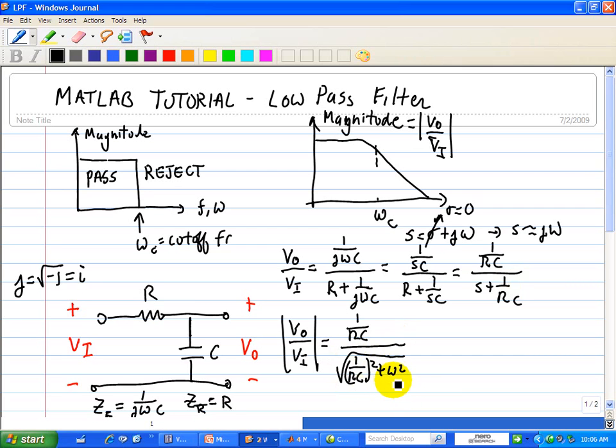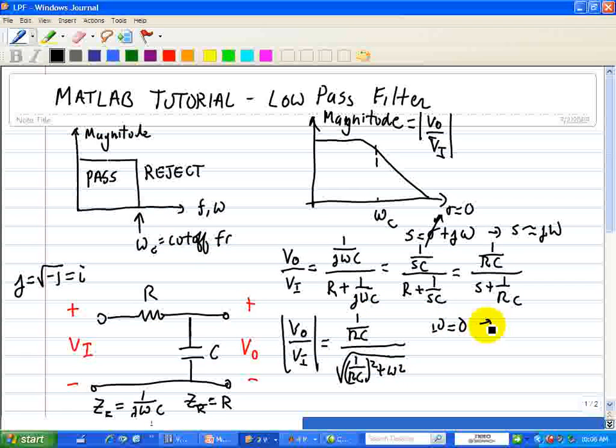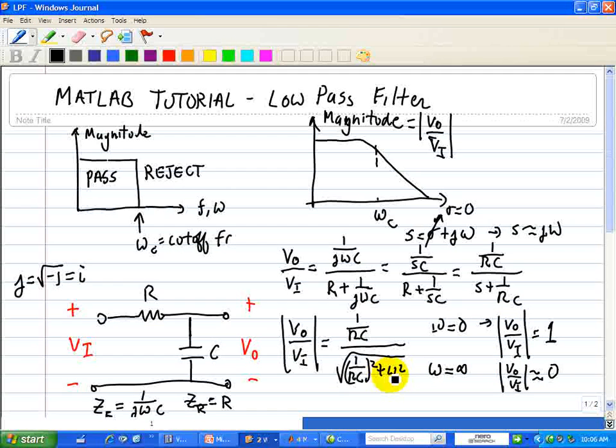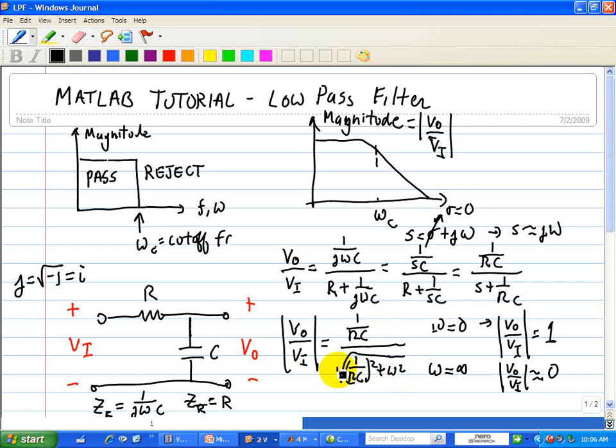When omega is equal to 0, the gain VO over VI is approximately equal to 1. When omega is equal to infinity, then VO over VI is approximately equal to 0. As omega gets larger and larger, this quantity goes to 0.